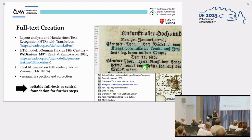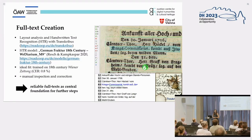We use Transkribus, concretely the publicly available HTR model German Fraktur 18th century Wienerisches Diarium M9, which was created by Resch and Kampkaspar. Since this model was trained on the 18th century Wiener Zeitung and has a very low character error rate of 0.8%, it offers an ideal fit for text recognition of the arrival lists. We also included a phase of manual inspection and correction to ensure the utmost accuracy of all transcriptions, since reliable full text is a fundamental basis for all NLP tasks.